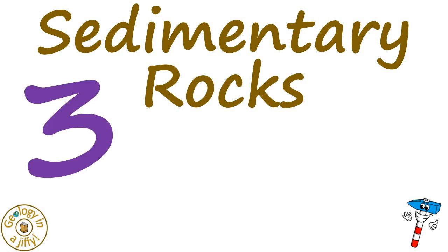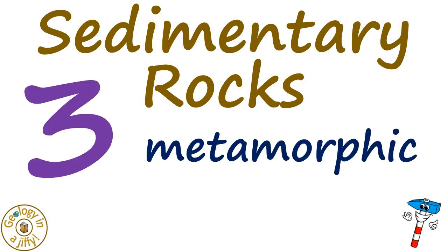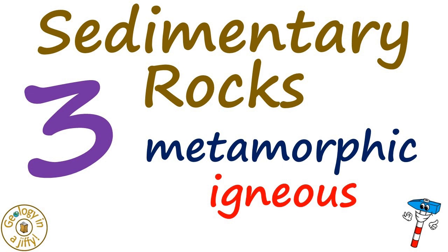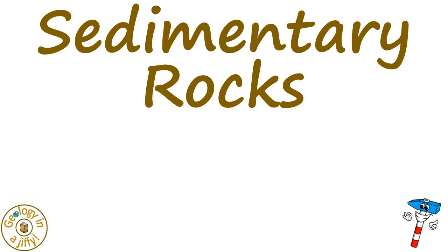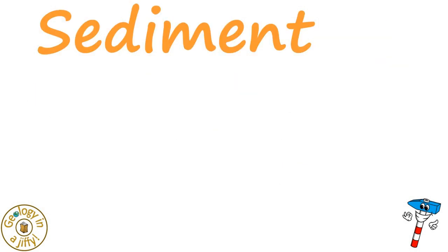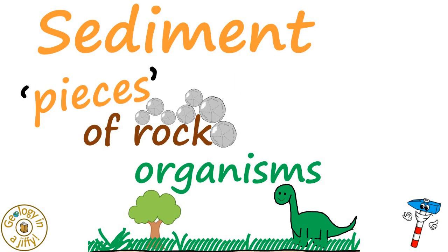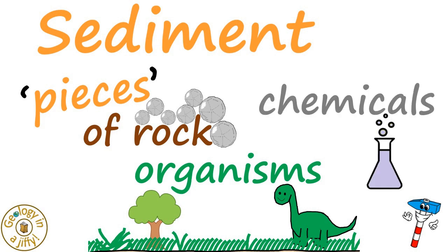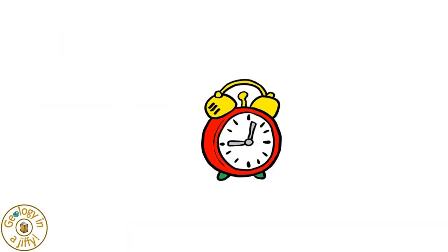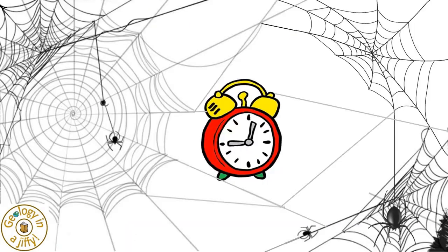Sedimentary rocks are one of the three main groups of rocks, the others being metamorphic rocks and igneous rocks. Sedimentary rocks are made of sediment, which are pieces of older rock, or organisms, or can be made of chemicals too, all formed over a long space of time.